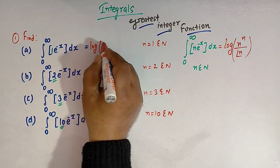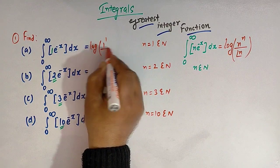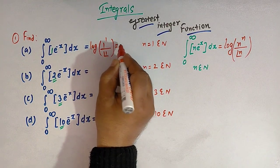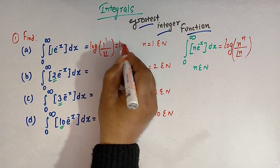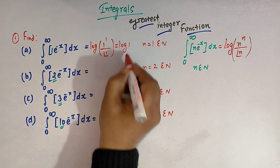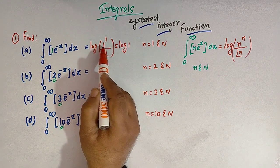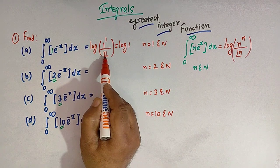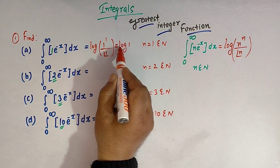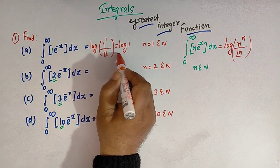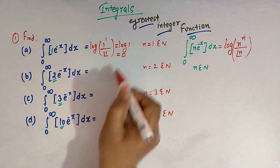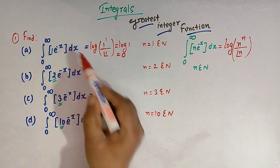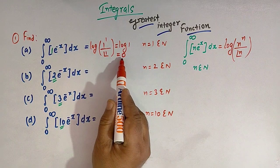So for the first integral, n equals 1, so we have log of 1 raised to 1 divided by factorial of 1. This is simply log of 1, because 1 raised to 1 is 1 and factorial of 1 is 1, and log 1 equals 0. So the value of this first integral is 0.